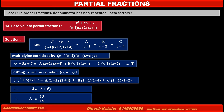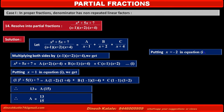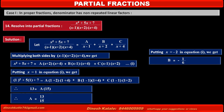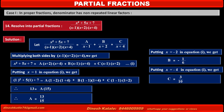To find the value of B, put x equals minus 2 in equation 1. We get B equals minus 1 upon 6. To find the value of C, put x equals minus 4 in equation 1. We get C equals 3 upon 10.